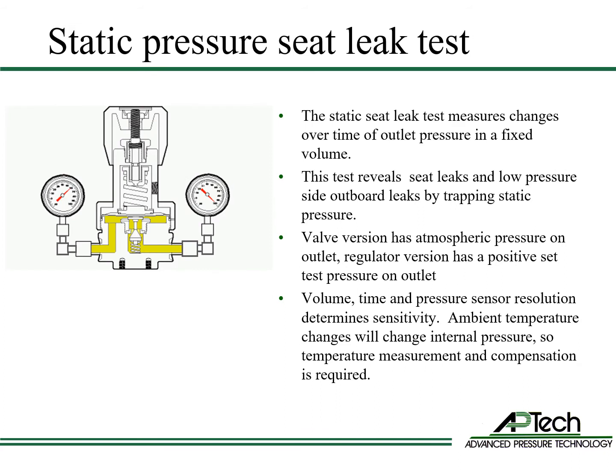Valve and regulator seat leaks are also tested using static pressure. This test can use any gas and measures changes over time of the outlet pressure in a fixed volume. This test reveals both seat leaks and low pressure side outboard leaks by trapping static pressure. The valve version of this test usually has atmospheric pressure on the outlet. The regulator version adjusts the outlet pressure to a given positive test pressure setting. Test sensitivity is determined by trap volume, pressure sensor resolution, test pressure, and time. Ambient temperature changes over time will also affect test accuracy, so temperature measurement and compensation is required. Many customers perform this test after helium leak testing and also before system startup.